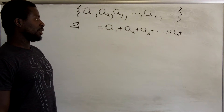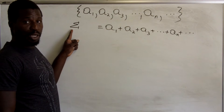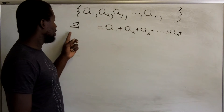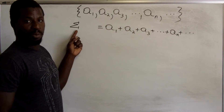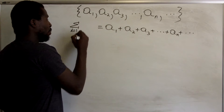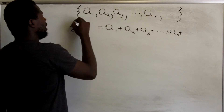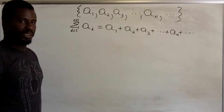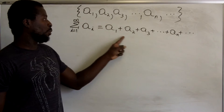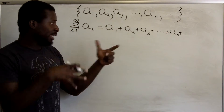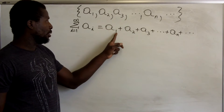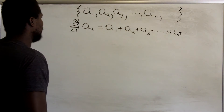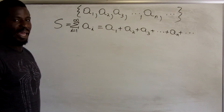We use the Greek letter Sigma — capital Sigma — to represent the sum. The notation shows i equals 1 at the bottom, telling you where to start counting, and infinity at the top, telling you where to end. The terms all look like a_i, where i starts at 1 and goes up to infinity. This is a condensed form of the sum a1 plus a2 plus a3 plus a4, all the way to infinity. We call this the series S.